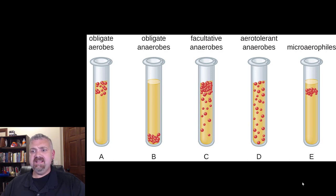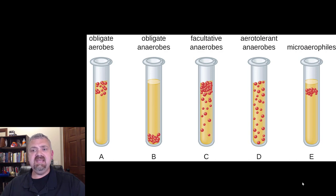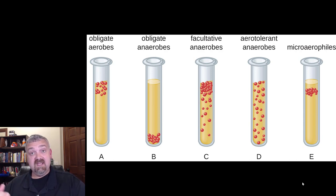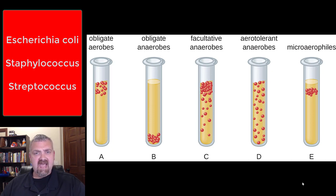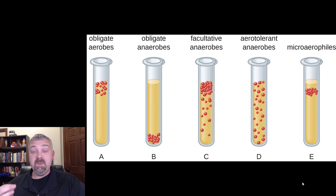The next two types can grow anywhere and everywhere in a test tube. First we have the facultative anaerobes. A facultative anaerobe prefers oxygen — it wants oxygen to be around, which is why you see the most growth at the top of the test tube — but it doesn't need it, so it can actually grow without it. If oxygen is available it will grow better, but if oxygen is not available it can still survive. Lots of big important examples here: E. coli, staph, strep — those are all examples of facultative anaerobes. They want oxygen, but if it's not around they can still survive, which gives them a huge advantage over obligate aerobes that can only survive where there's lots of oxygen.